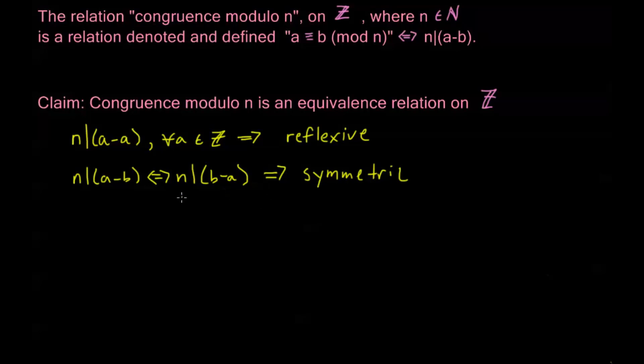Now, all that's left is transitive. So, I need to show that if n divides a minus b and n divides b minus c, I need to show that n divides a minus c. That's going to show that this is transitive, right? This is saying that a is congruent to b and b is congruent to c. And if this is going to be transitive, this means that a is congruent to c. That's what we mean by transitive. Now, it's going to take a little bit to get there.